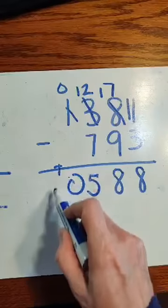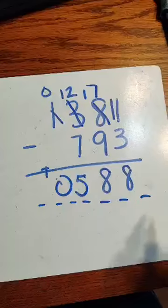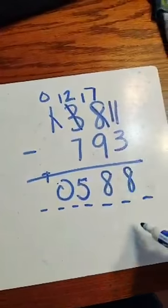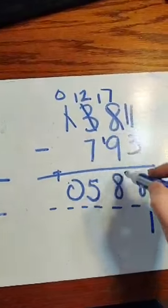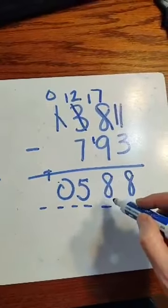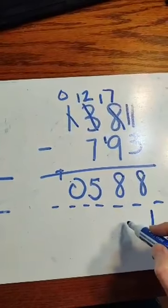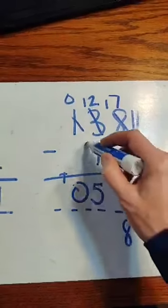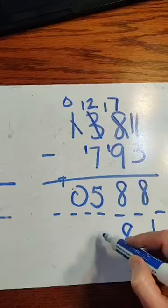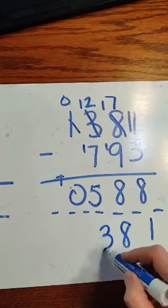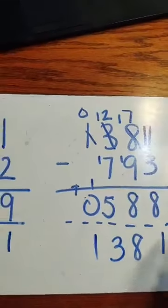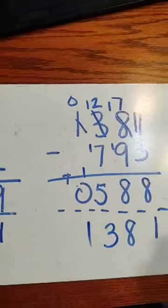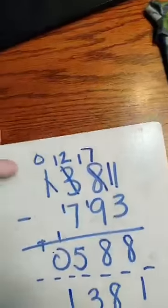And again, I can check my work. I can add these. 8 plus 3, 11. 9 plus 8, plus 1. 18. 7 plus 5, plus 1. 13. 1. Did I get my top number? Yes, I did.